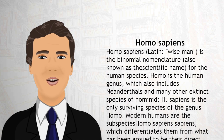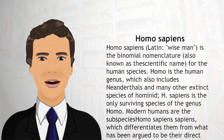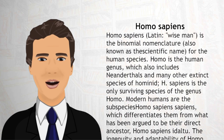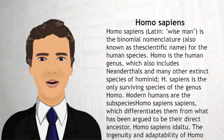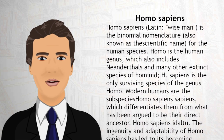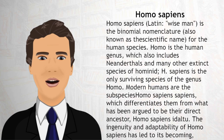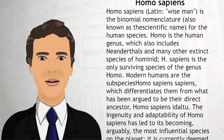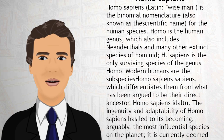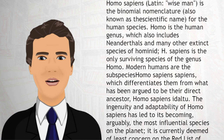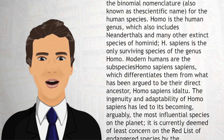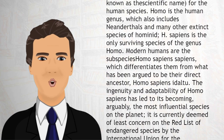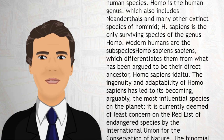Modern humans are the subspecies Homo sapiens sapiens, which differentiates them from what has been argued to be their direct ancestor, Homo sapiens idaltu. The ingenuity and adaptability of Homo sapiens has led to its becoming, arguably, the most influential species on the planet.